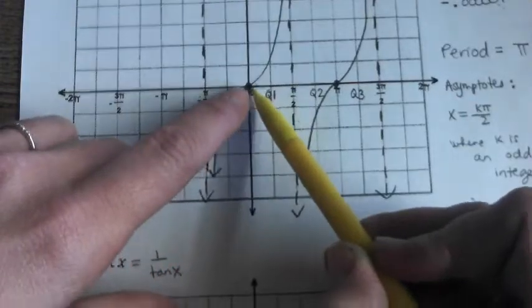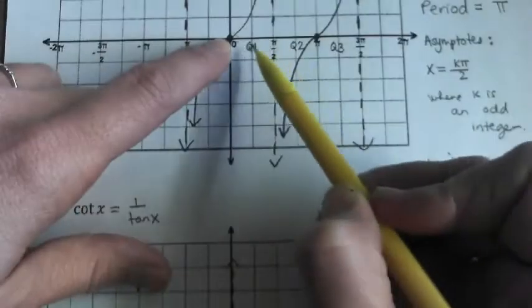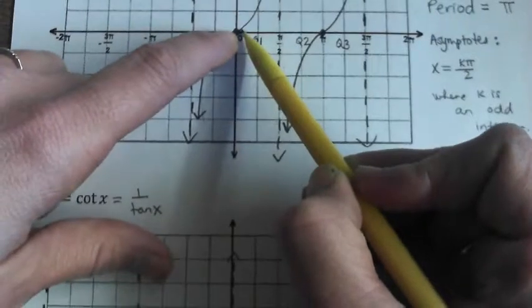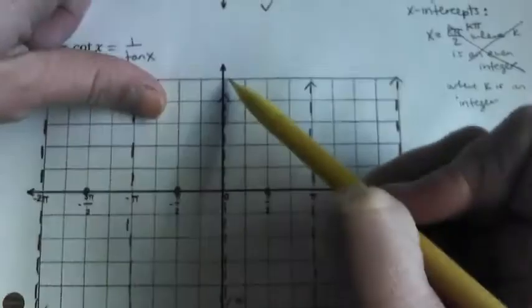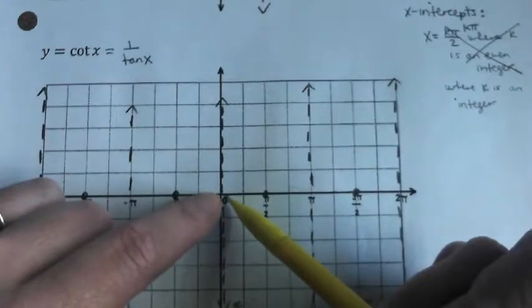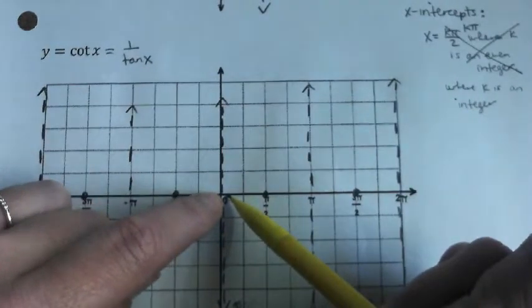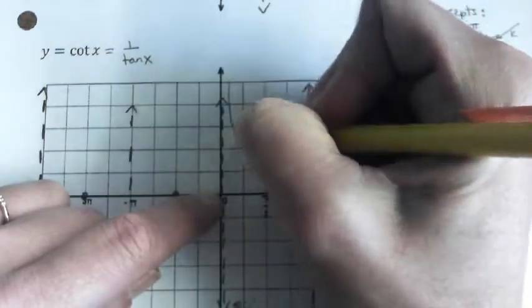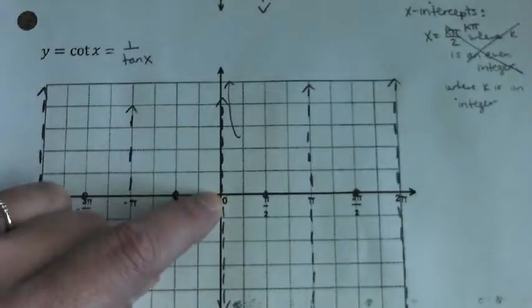So just after 0, where in a tangent graph we had a teeny tiny number, positive but teeny tiny, just after 0 here we're going to have a positive, but it's not going to be teeny tiny. It's going to be humongous, a.k.a. it's going towards positive infinity.